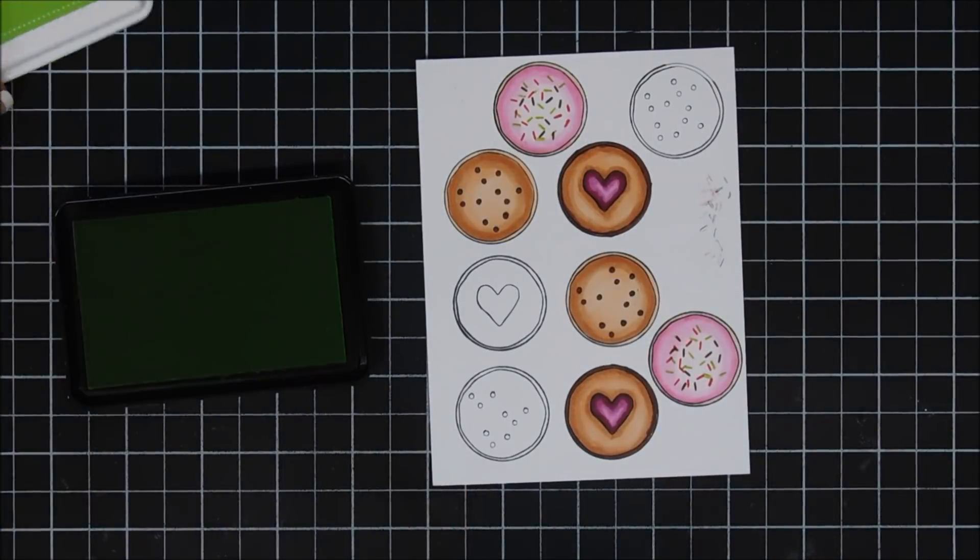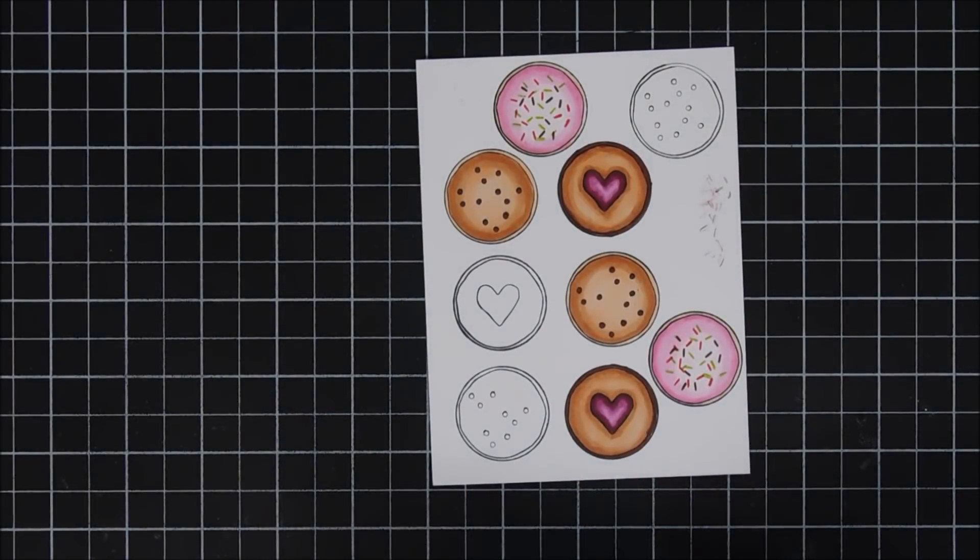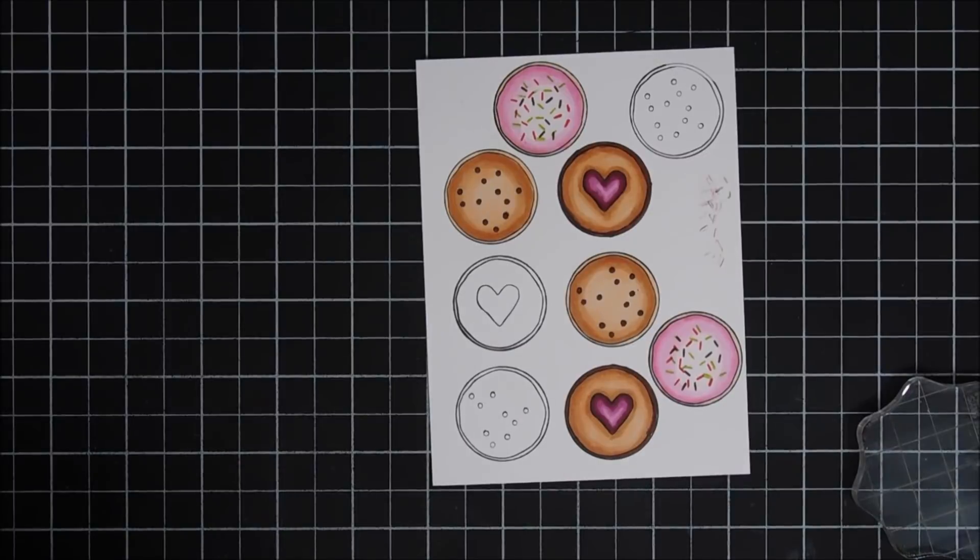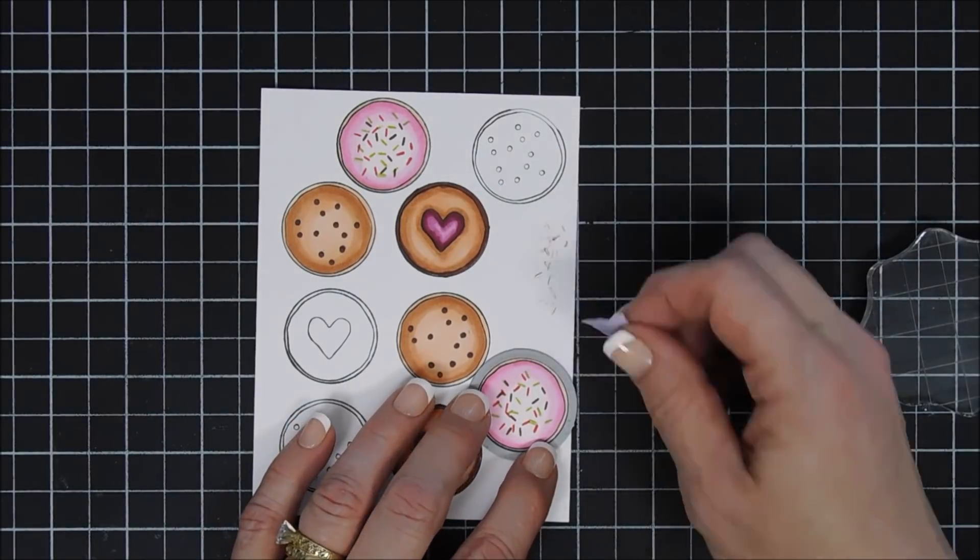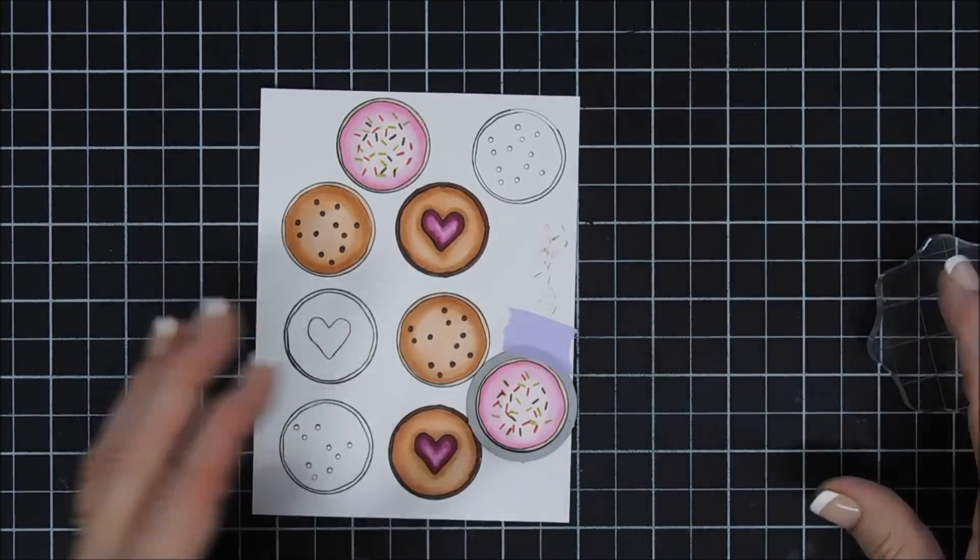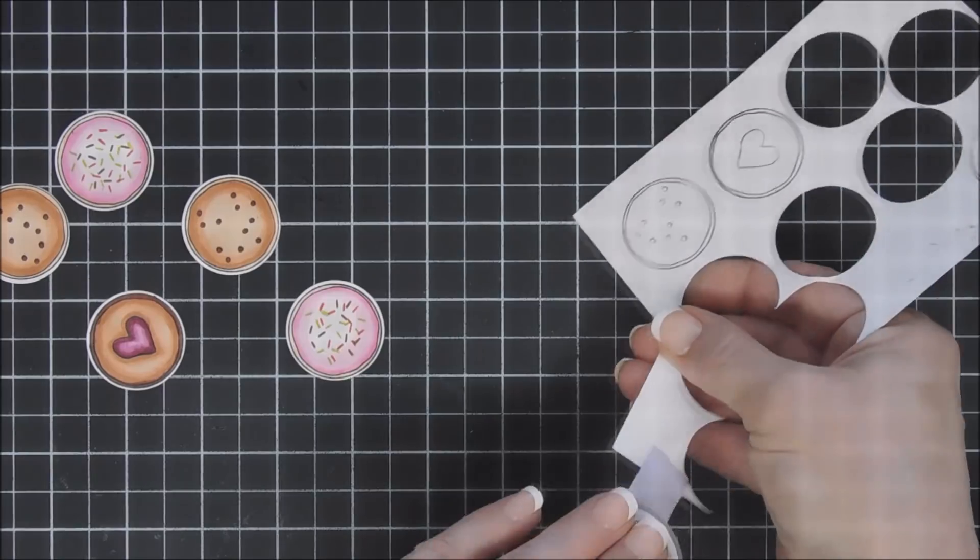Okay, I'm going to take the coordinating die and cut each one of my cookies out. Once everything is die cut out, we're going to work on our background panel. We'll just put these aside.